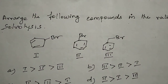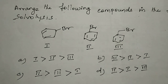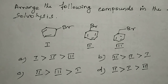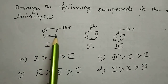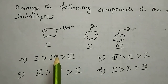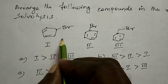This is a JAM question. Arrange the following compounds in the rate of solvolysis. Solvolysis is when a solvent plays a dual role as both solvent and nucleophile — it is basically a substitution reaction. These are all SN1 reactions, so once the bromine leaves the substrate, you get cations.